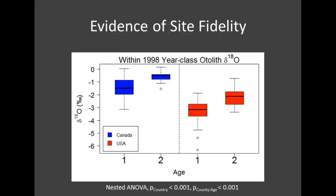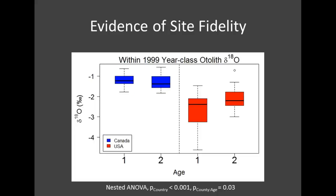Here we have box plots again showing age-1 fish versus age-2 fish from the US and Canada. We used a nested ANOVA — so an age-1 fish from the 1998 year class would have been captured in 1999, and an age-2 fish from that year class would come from 2000. We used the nested ANOVA to first confirm region-specific differences between groups and then look within countries to compare age-2 to age-1 fish. We saw significantly higher delta-oxygen-18 values for age-2 fish than age-1, and this is true for both the US and Canada. For the 1999 year class we again saw region-specific differences but only saw age-2 fish significantly higher in the US sample.